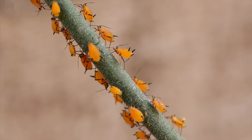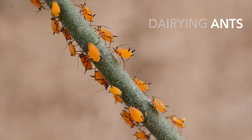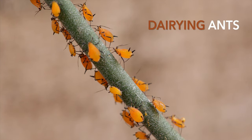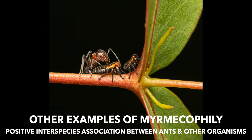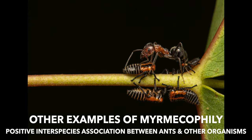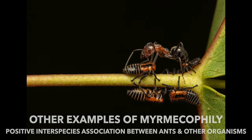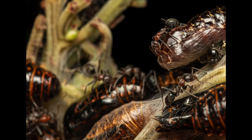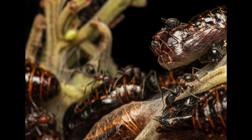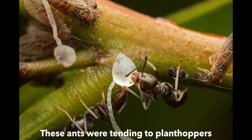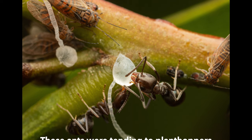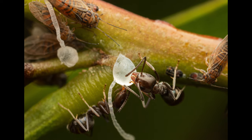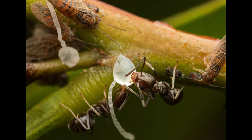Some species of ants farm aphids — they are the so-called dairying ants. They protect aphids on the plants where they feed and consume the honeydew the aphids release. This is a mutualistic symbiotic relationship, with dairying ants milking the aphids by stroking them with their antennae. Aphids attended by ants also tend to increase the production of honeydew in smaller drops with a greater concentration of amino acids.